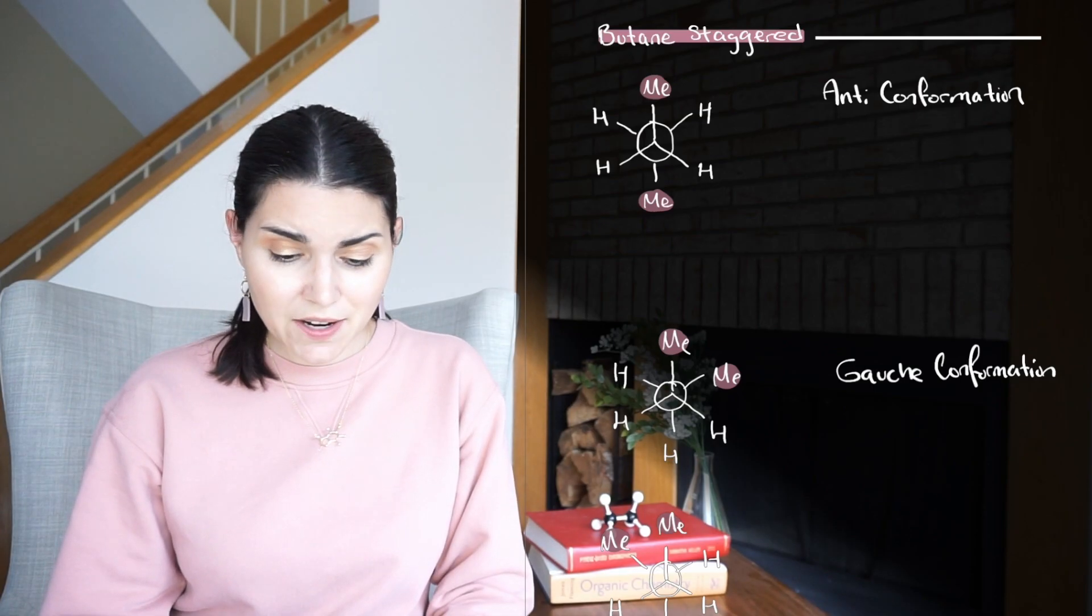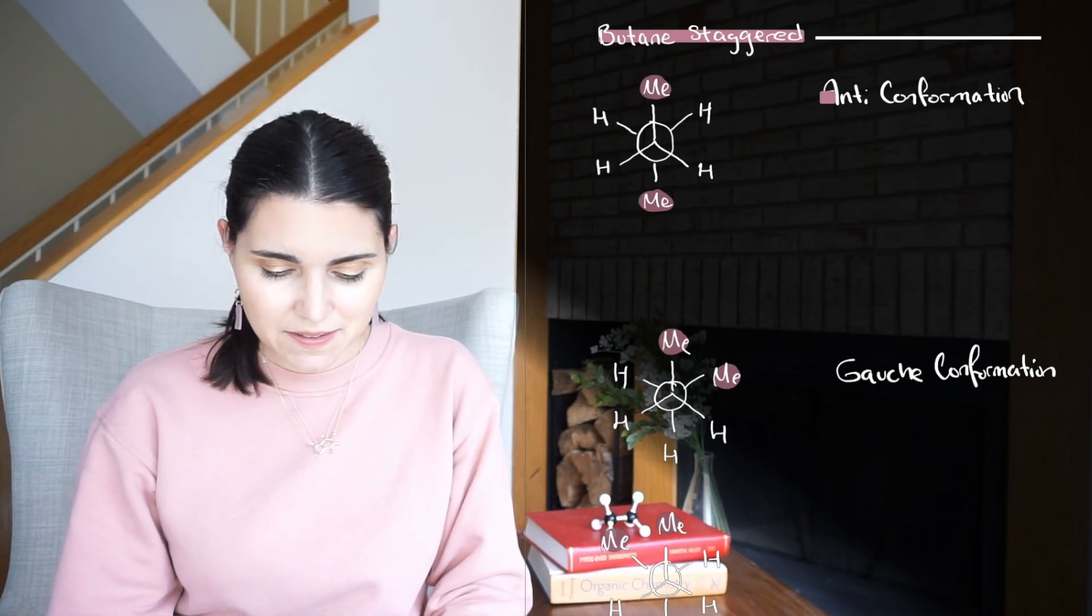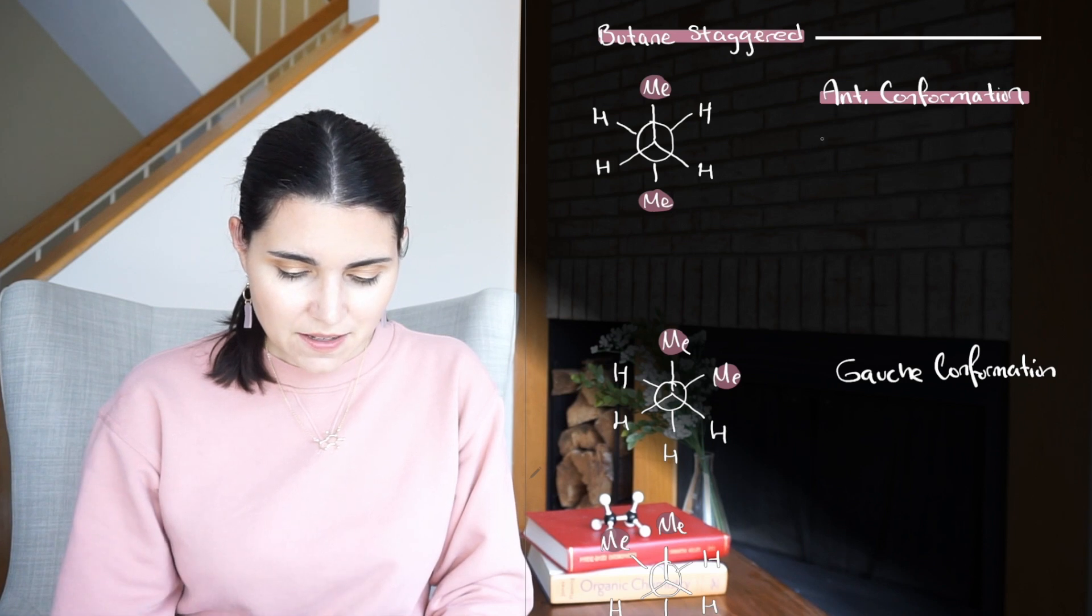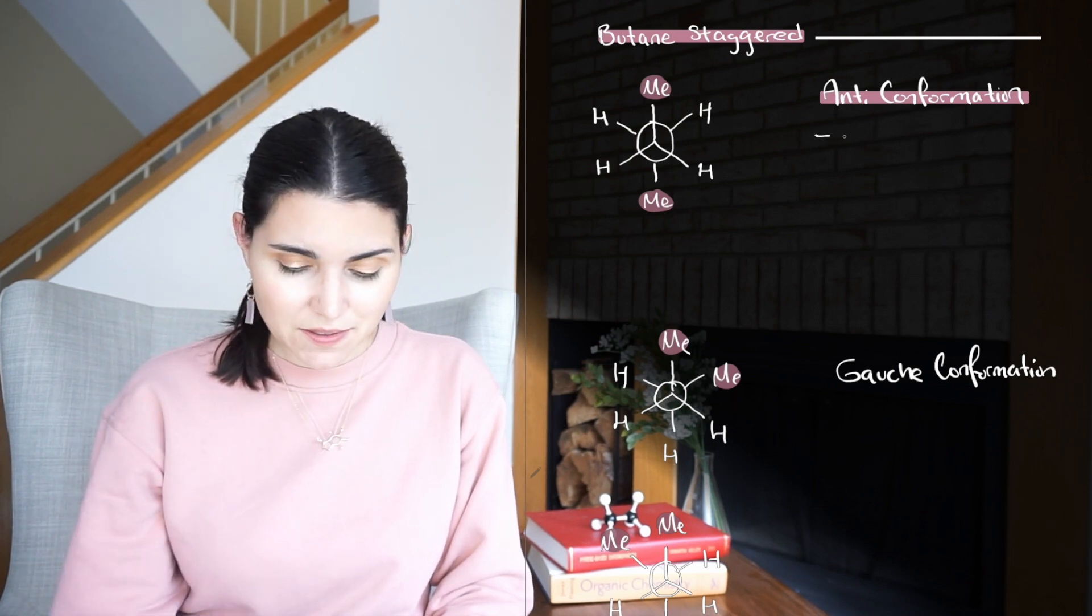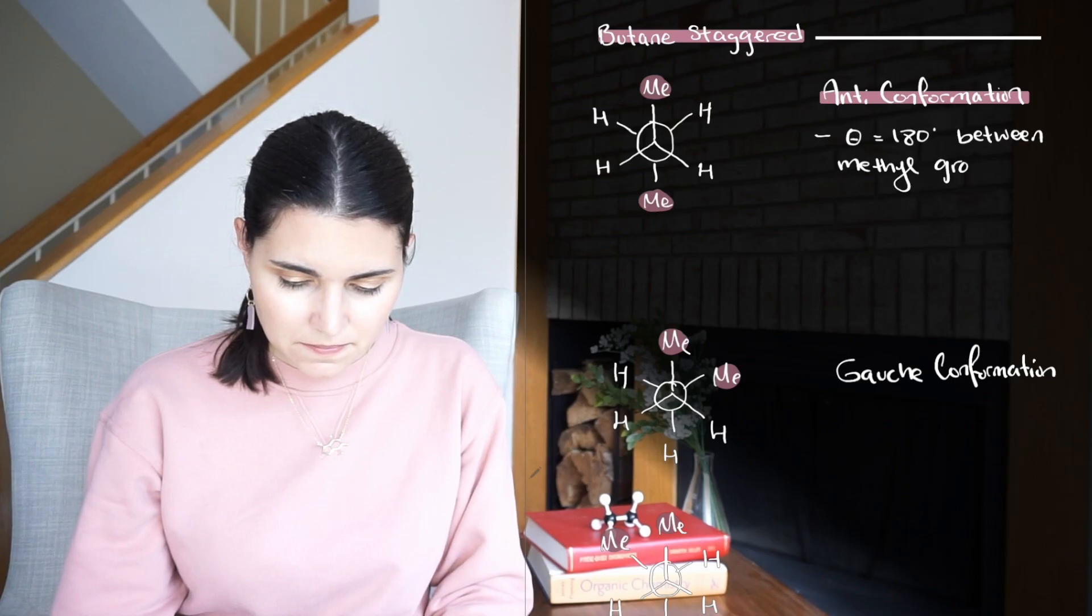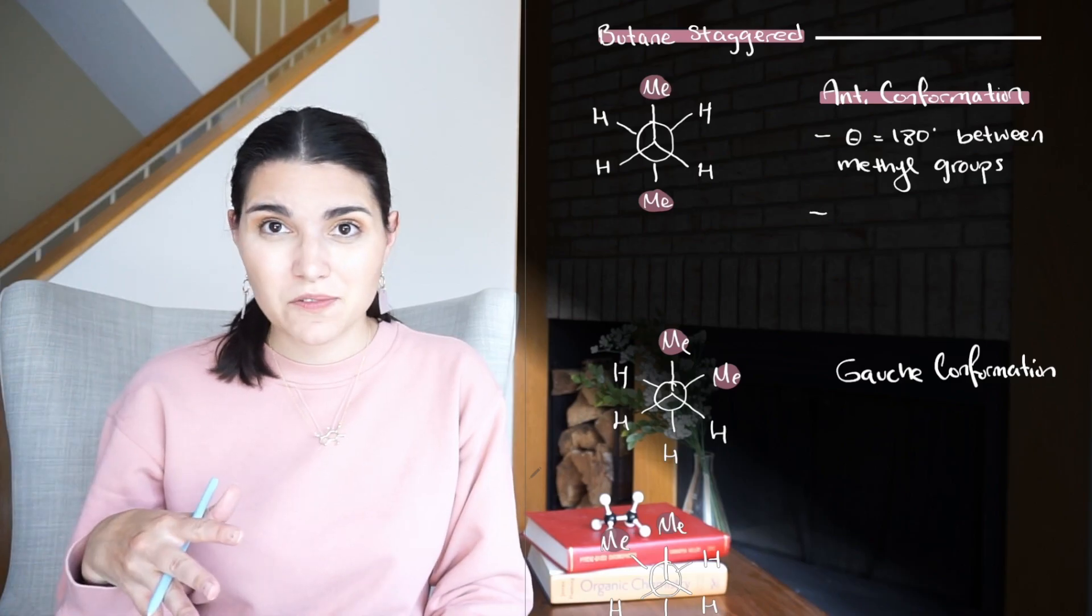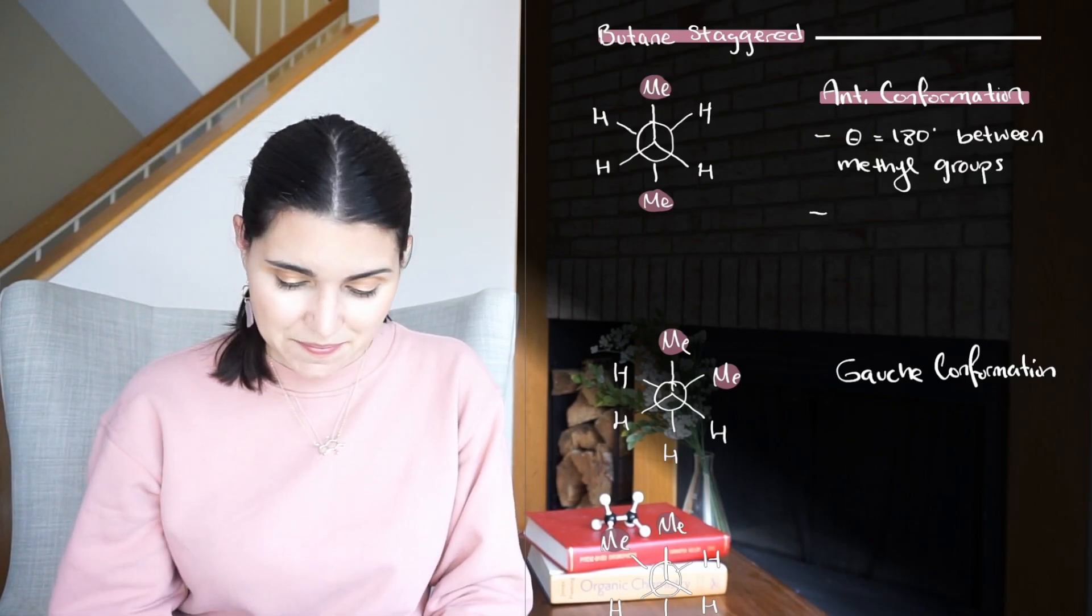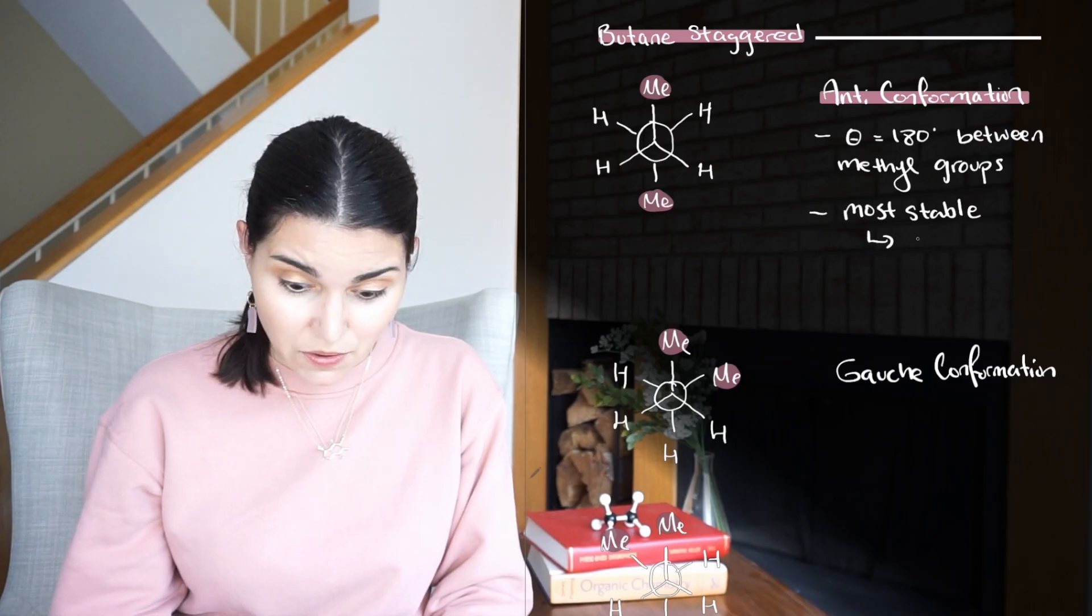The first staggered conformation that we're going to talk about for butane is the anti conformation. In this conformation, the two methyl groups are pointed 180 degrees apart. So that dihedral angle theta between them equals 180 degrees. And this is the most stable conformation of all of the possible conformations of butane. Remember, most stable means that it has the lowest energy.